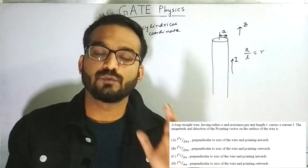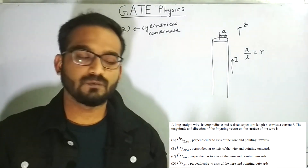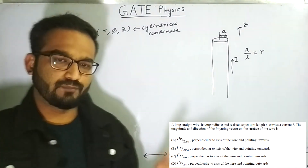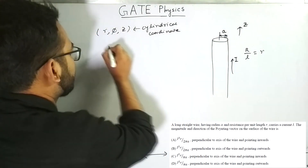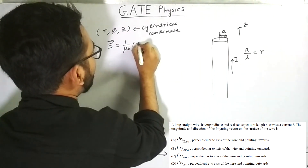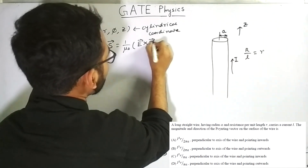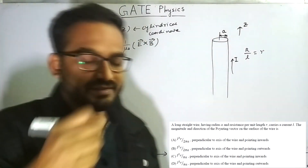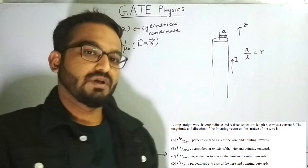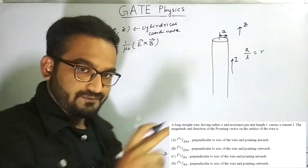In this problem we are required to find the value of the Poynting vector. The formula for Poynting vector is S equals 1/μ₀ times E cross B, where E is the electric field and B is the magnetic field. We have to calculate them separately, so let's first calculate B, the magnetic field.